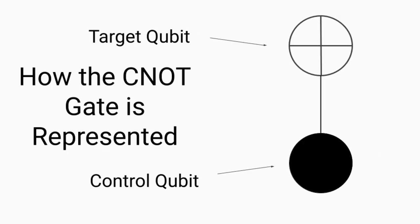So now let's take a look at how the CNOT gate is represented on quantum circuits. Recall that the CNOT gate is a two-qubit quantum gate, which allows us to create quantum entanglement. If the control qubit is zero, then the target qubit is unchanged. However, if the control qubit is one, then the target qubit has an X gate applied to it, meaning that it just flips its state.